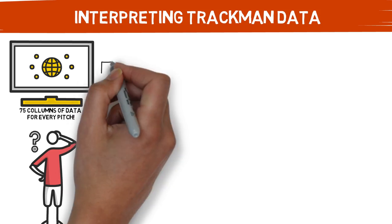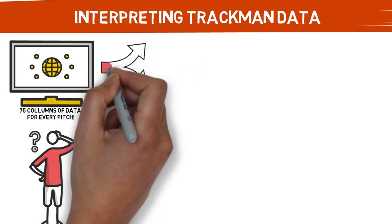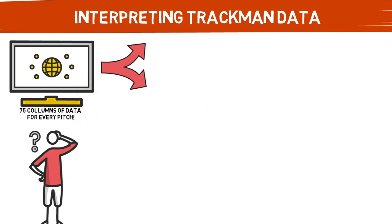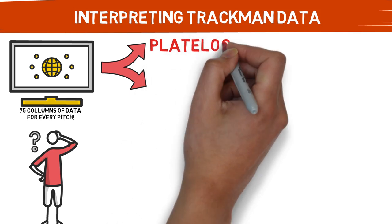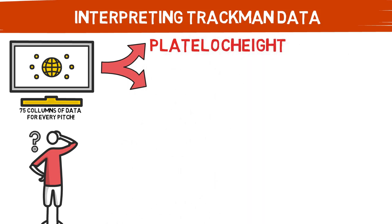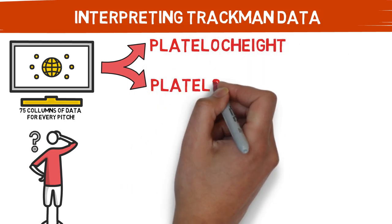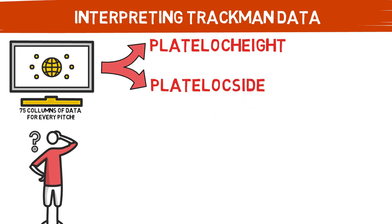In today's video, we are going to break down just two of those columns in order to understand how we can better evaluate catcher's and umpire's performance. The two variables that we will be breaking down today are plate-loc height or plate-location height and plate-loc side or plate-location side. They can be found in columns AO and AP if you are exporting a TrackMan report post-game.